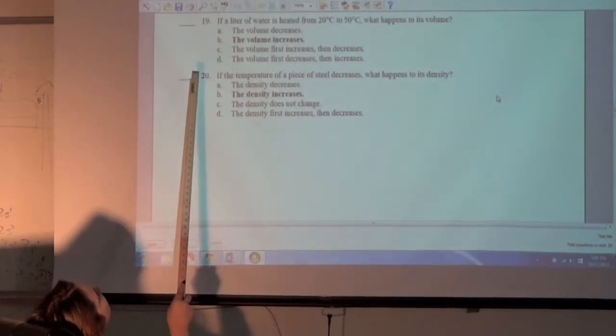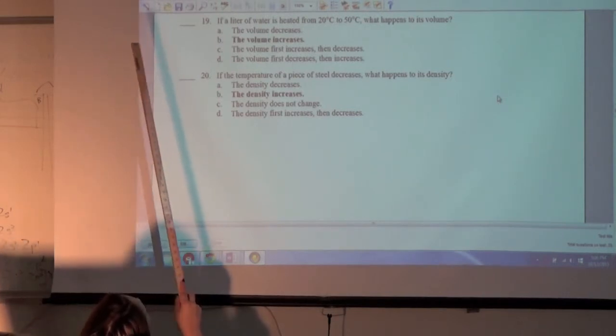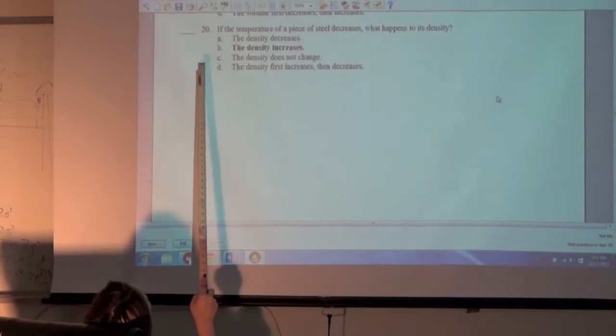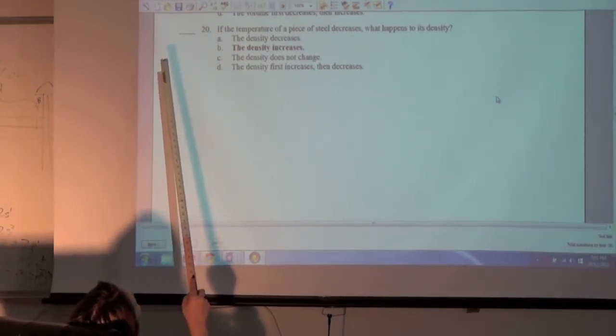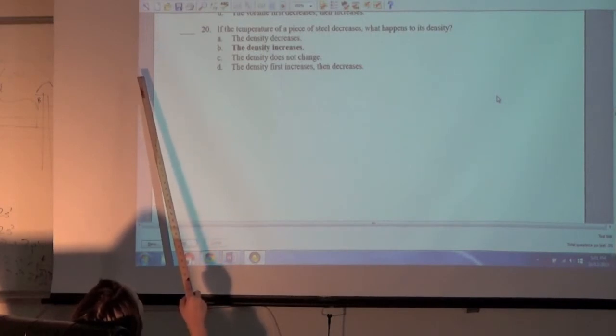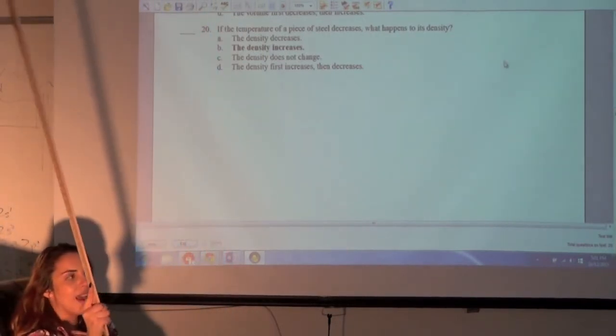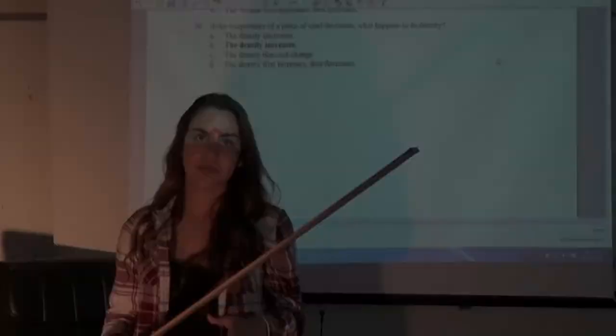If a liter of water is heated from 20 Celsius to 50 degrees Celsius, what happens to its volume? The volume increases. If the temperature of a piece of steel decreases, what happens to its density? B, the density increases. All right. So you got it all read, right? All read. You want to try one more? All right.